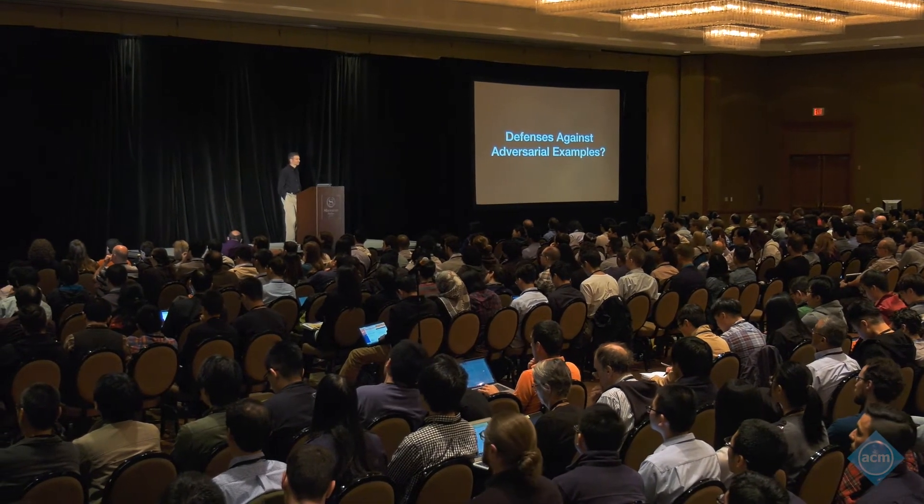So now let's talk about defenses. First thought: maybe if we keep the classifier secret, it'll be secure — since the simple attack requires knowledge of the parameters and weights. But the answer, as the transferability result shows, is no. You can keep your classifier secret, but I can train my own classifier, generate attacks on mine, and because of transferability, those will often fool your classifier as well.